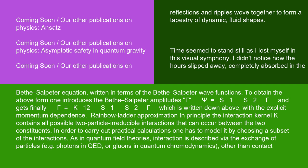To obtain the above form, one introduces the Bethe-Salpeter amplitudes γ ψ equals S₁S₂ γ and gets finally γ equals K₁₂S₁S₂ γ, which is written down above, with the explicit momentum dependence.